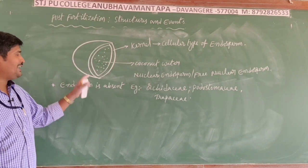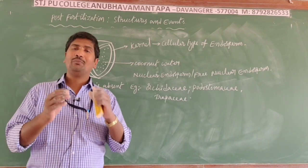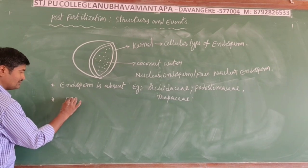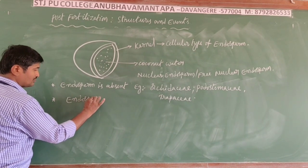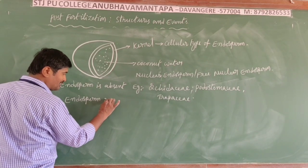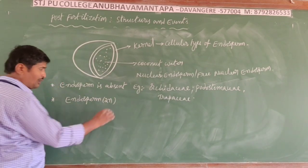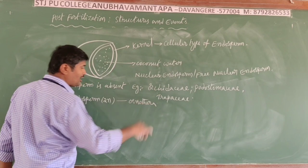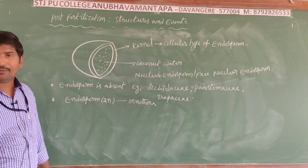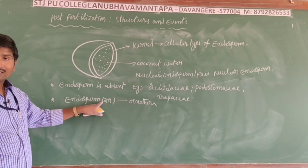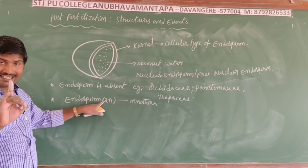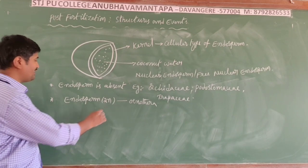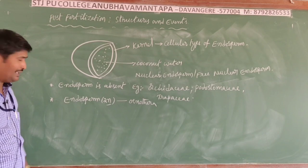Regarding the ploidy of endosperm: generally the endosperm is triploid (3N). But in some cases it is diploid (2N), for example in Oenothera lamarckiana, where the central cell contains only a single nucleus, so the endosperm ploidy is only 2N (diploid).